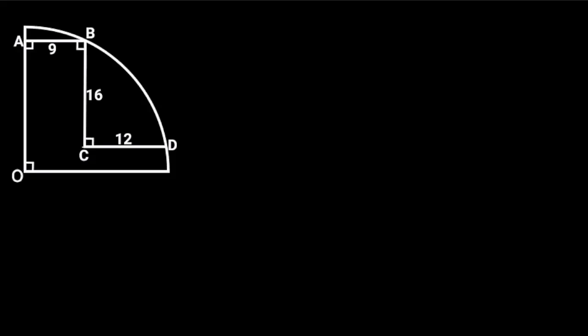To solve this problem, first let's extend line CD and call this point E. Observe that ABCE is a rectangle. It follows that BC is equal to AE, which is equal to 16, and AB is equal to EC, which is equal to 9. The opposite sides of a rectangle are equal.